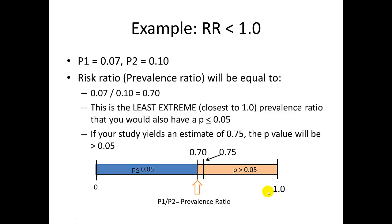For example, in our earlier calculations, our exposure was protective, therefore our prevalence ratio estimate was less than 1. Specifically, it was 0.7. In this example, this is the least extreme prevalence ratio compared to 1 that would also have a p value of less than or equal to 0.05. Anything larger than that in this area would not have a p value of less than 0.05. It would be greater than that. So, for example, if your study yielded an estimate of 0.75, the p value would be greater than 0.05.